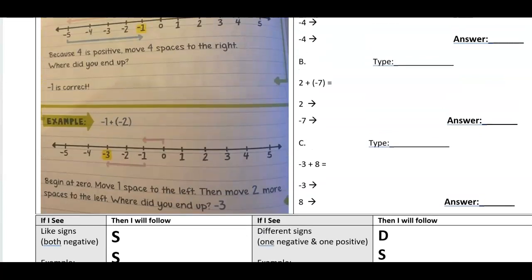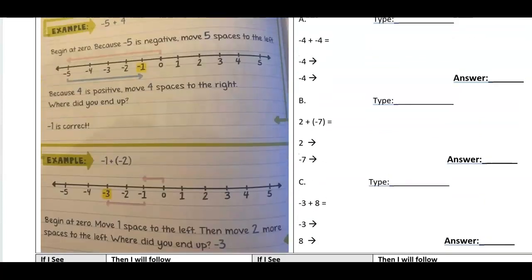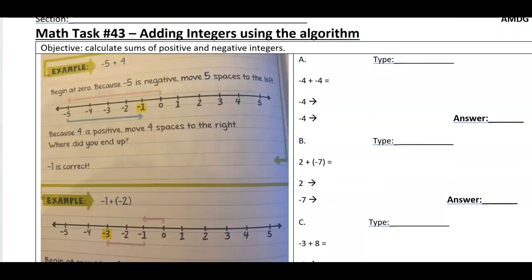So if you'll notice on the left here, you've got two problems, negative five plus four, and they use a number line. Negative five, you move five spaces to the left, and then four, which is positive, you move four spaces to the right, and you end up at negative one.